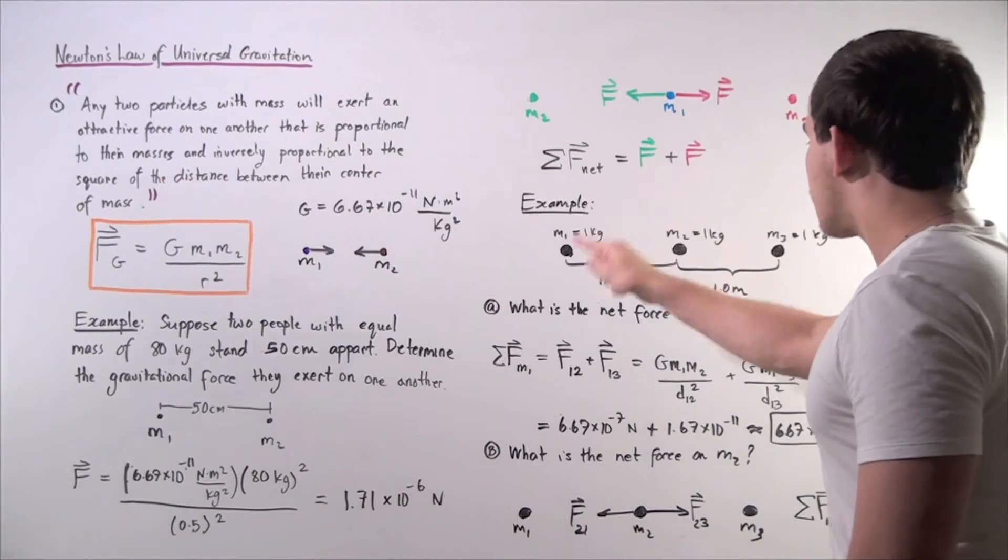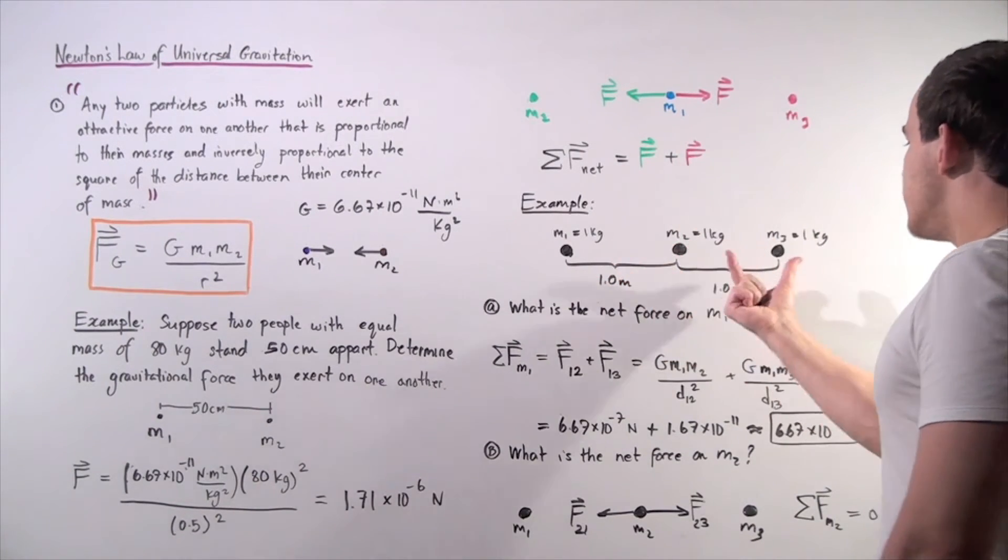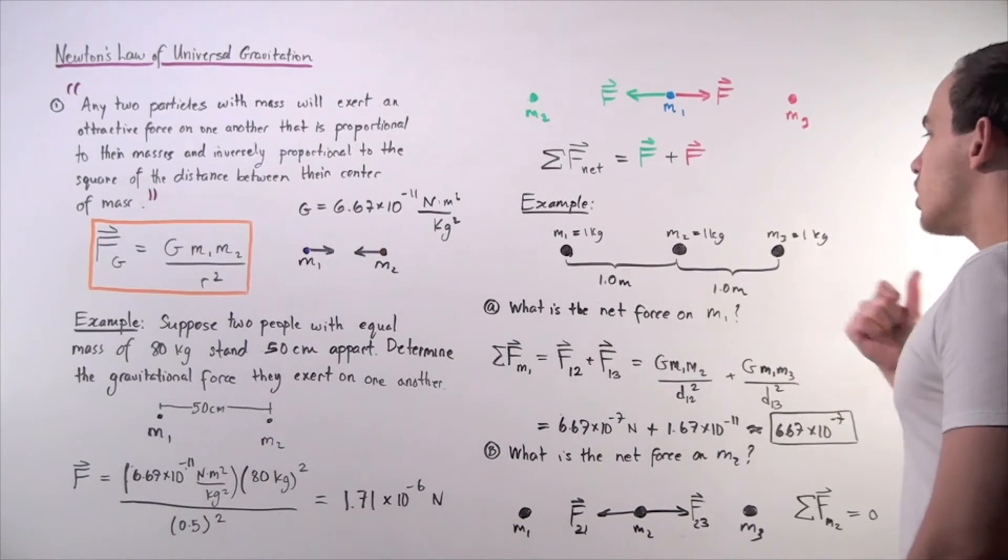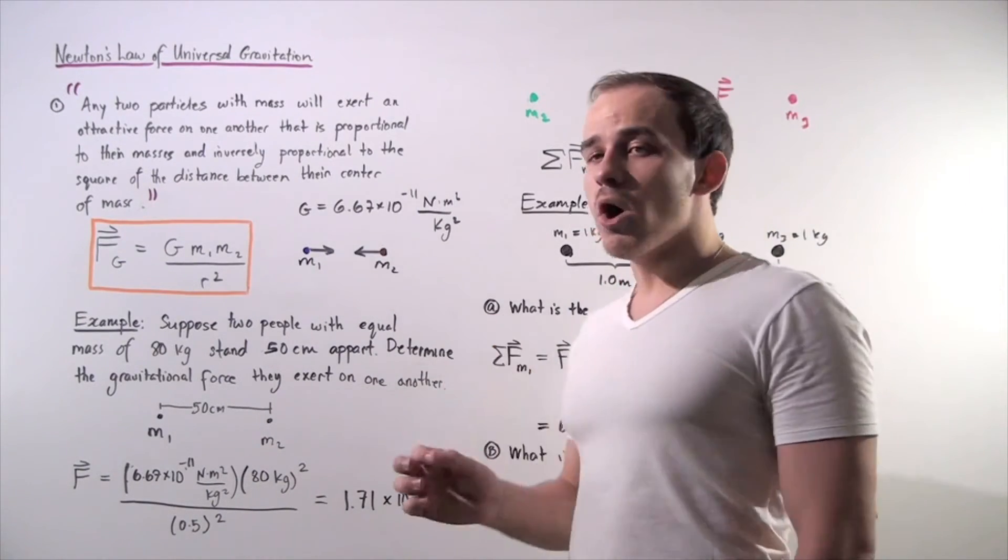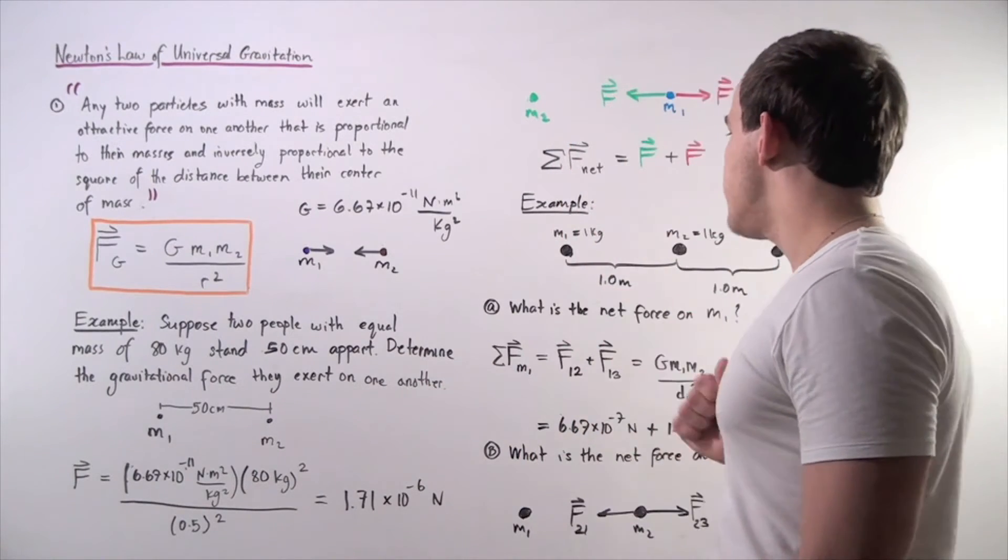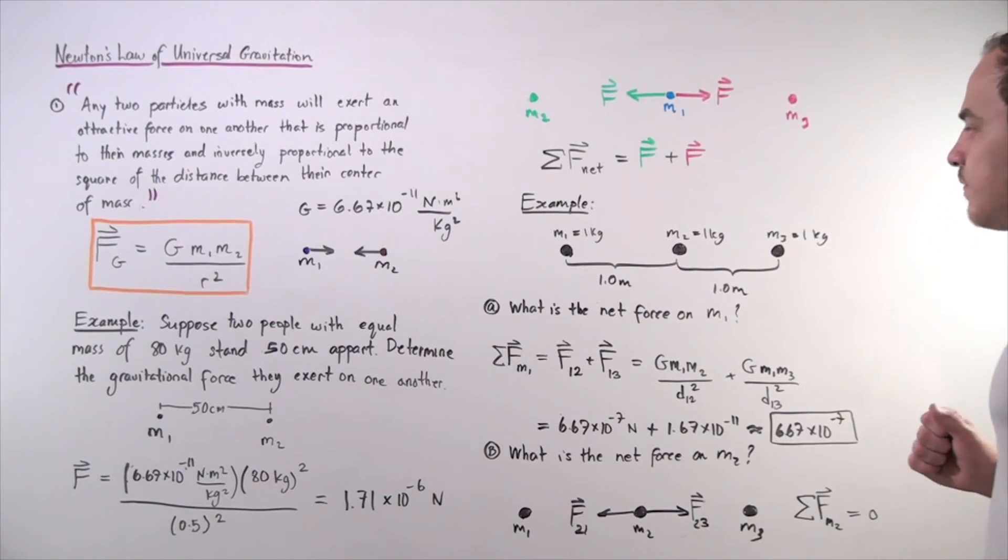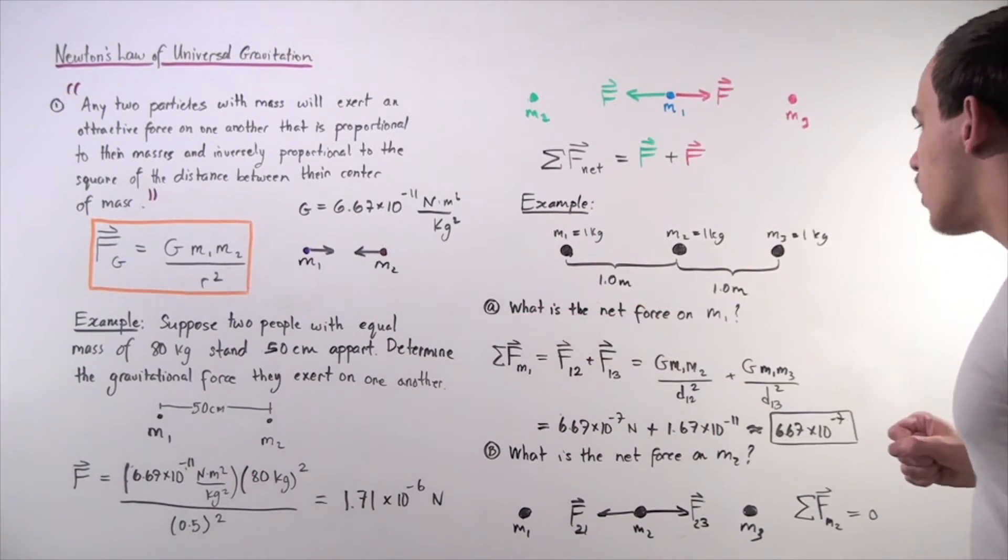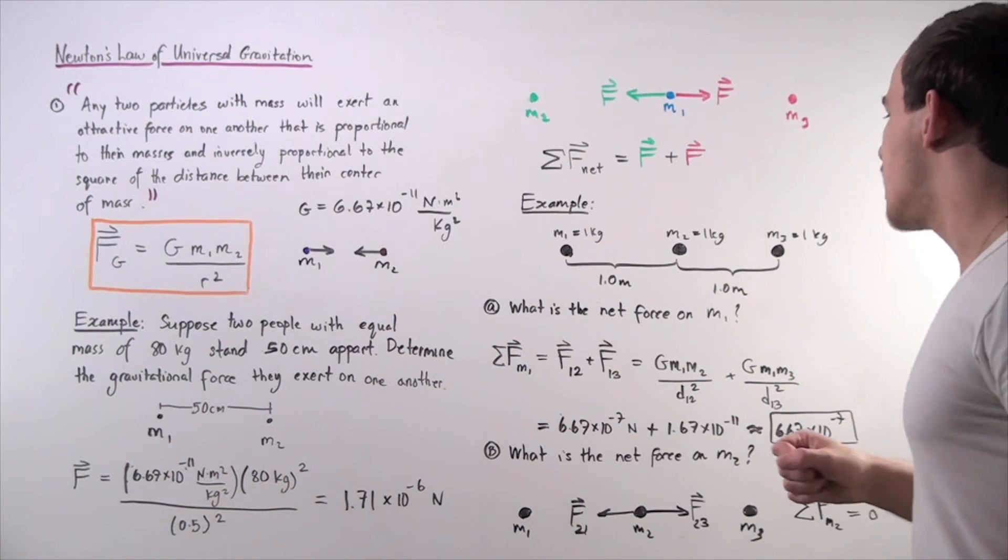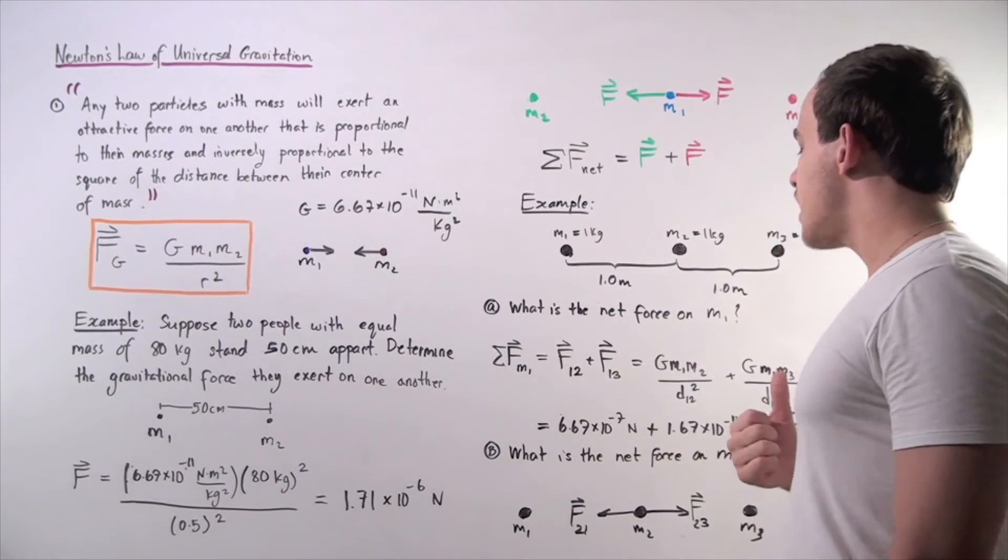Let's suppose I have three masses at equal distance apart, one meter apart, and each mass has a mass of one kilogram. Each object has a mass of one kilogram. We want to find what is the net force on mass one, and what is the net force on mass two. So let's begin with A.